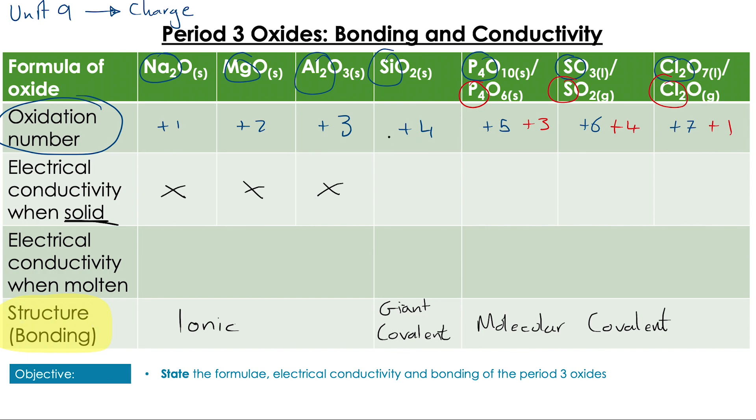None of these molecules conduct electricity when they are a solid. However, if we melt them, the picture becomes slightly different. As we know from Unit 4, when we melt ionic compounds, we end up with those mobile ions—positive and negative—that can migrate and conduct electricity.